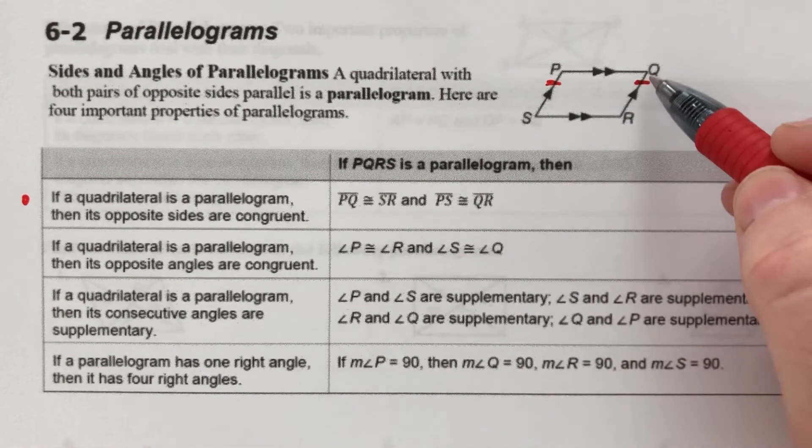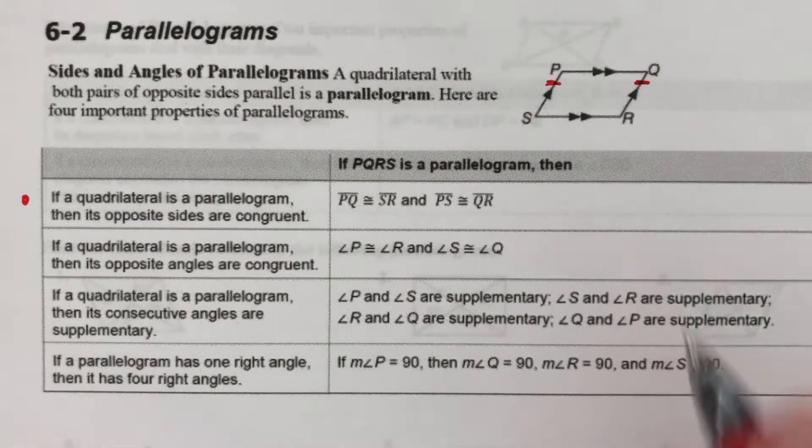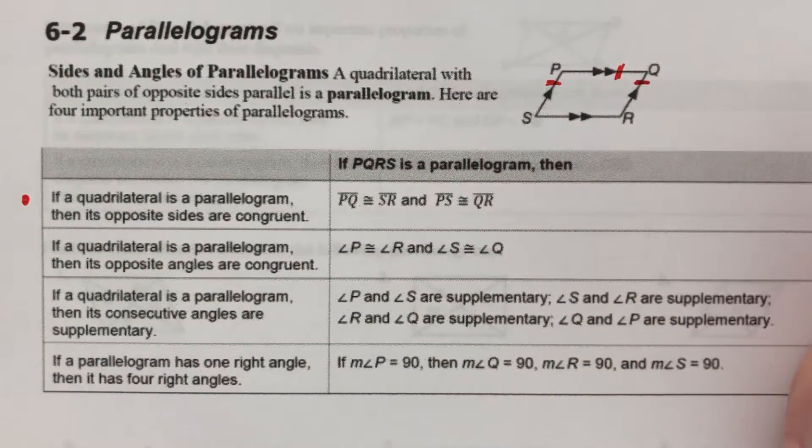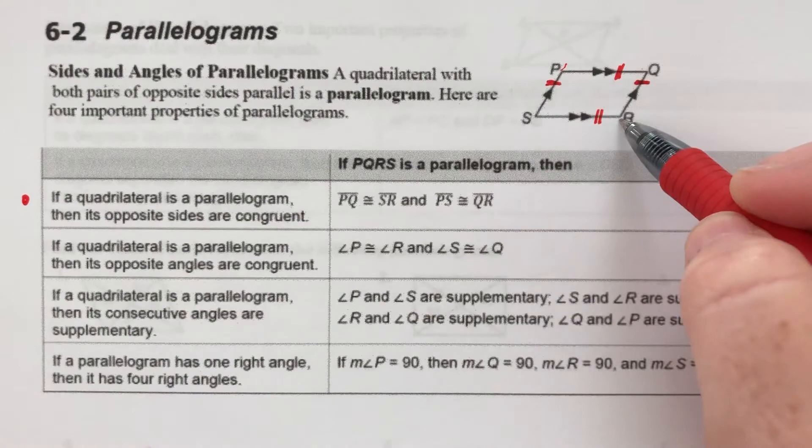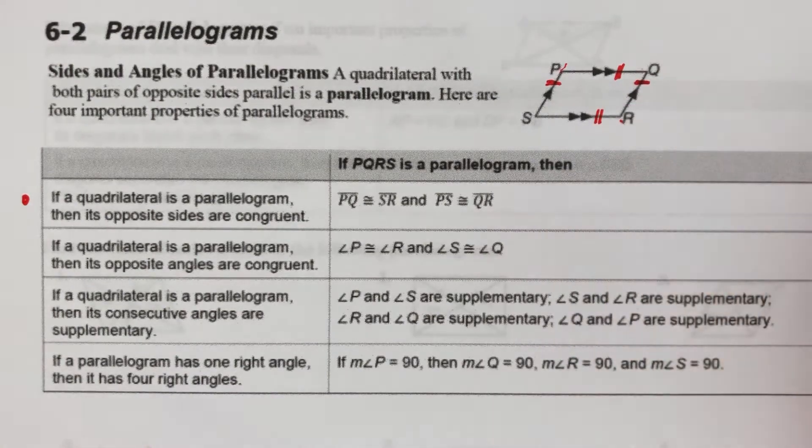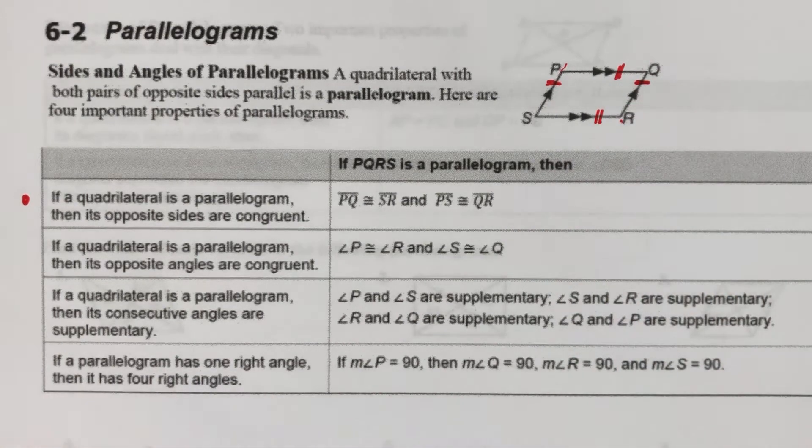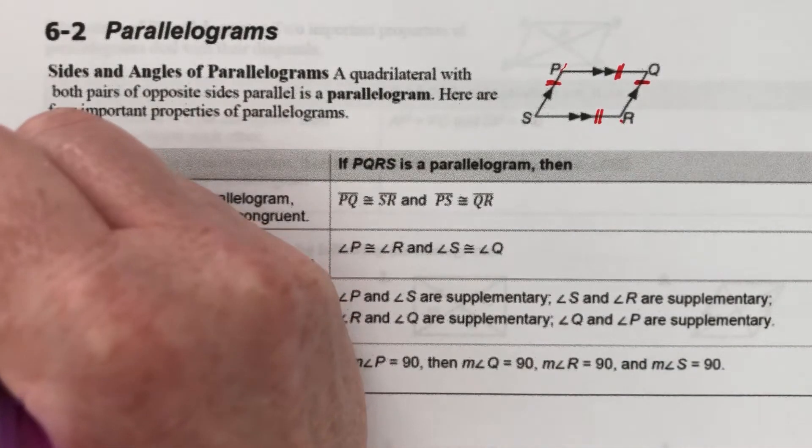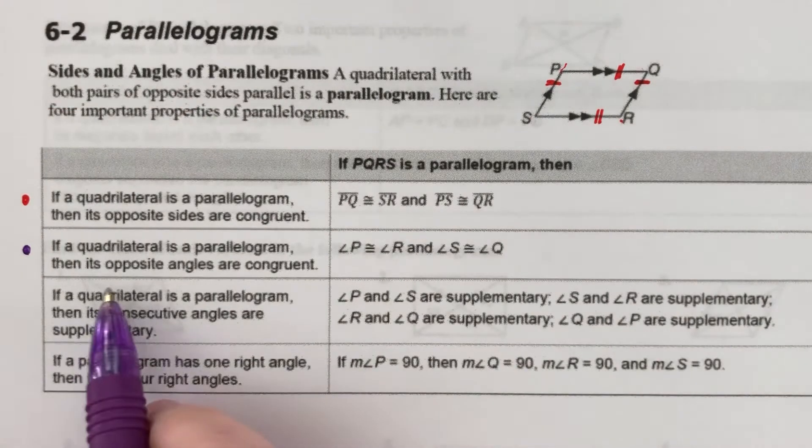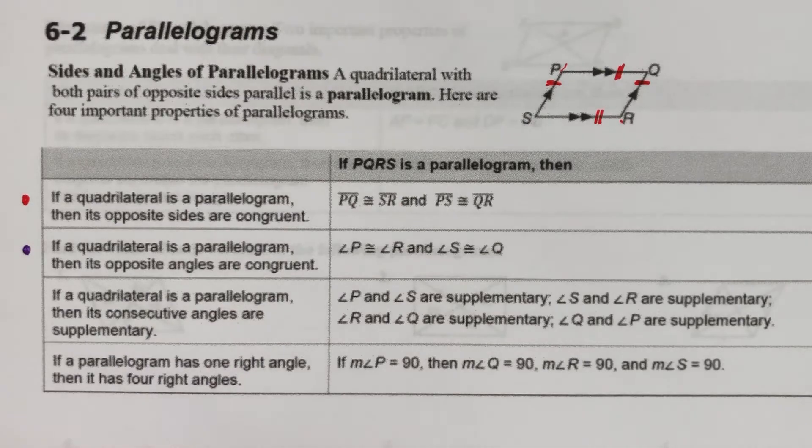So PS is congruent to QR, and PQ is congruent to SR. The opposite sides, both pairs, are congruent to each other. Next, if a quadrilateral is a parallelogram, then its opposite angles are congruent.